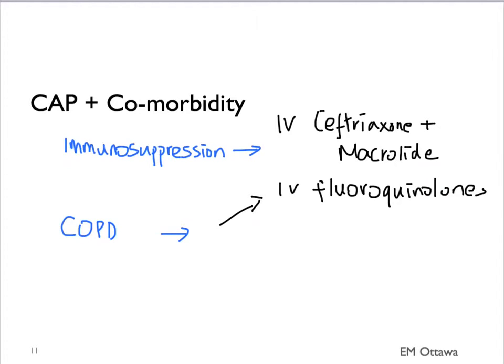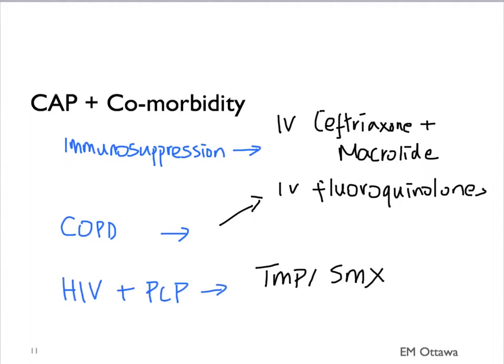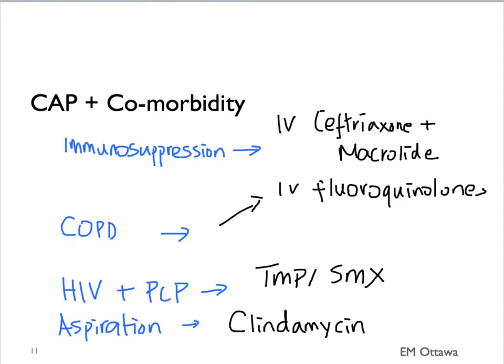In patients with HIV where we're worried about PCP pneumonia, trimethoprim-sulfamethoxazole is a good choice. In patients who have an aspiration pneumonia, we want to target anaerobes. Clindamycin is often used.